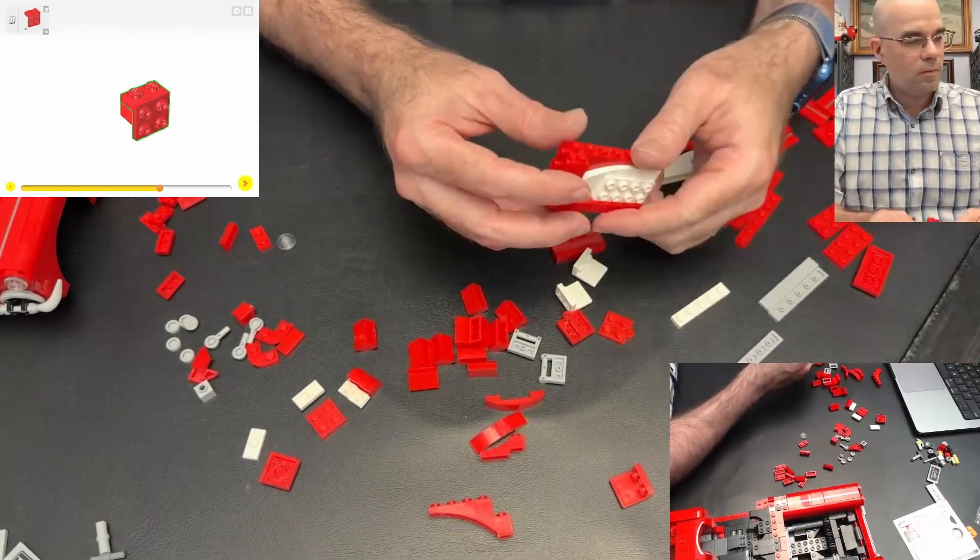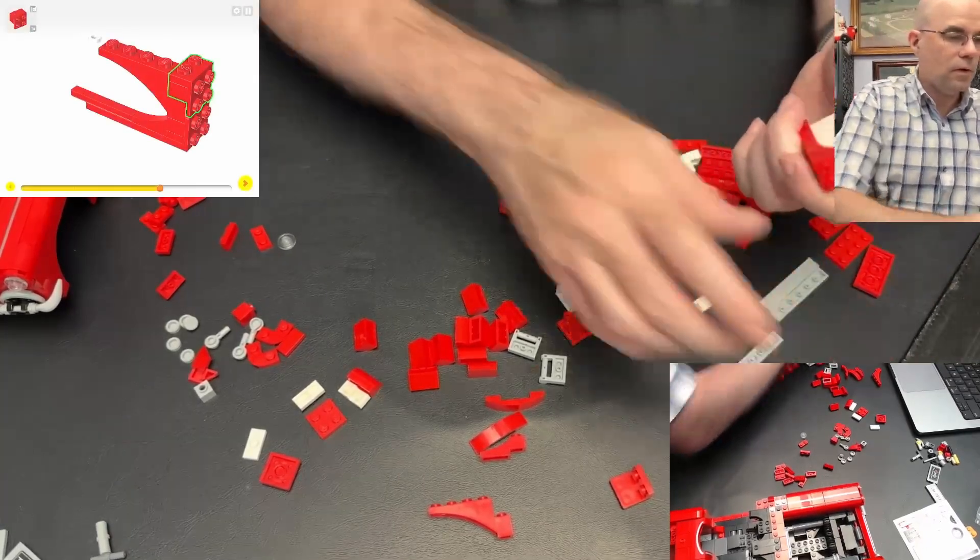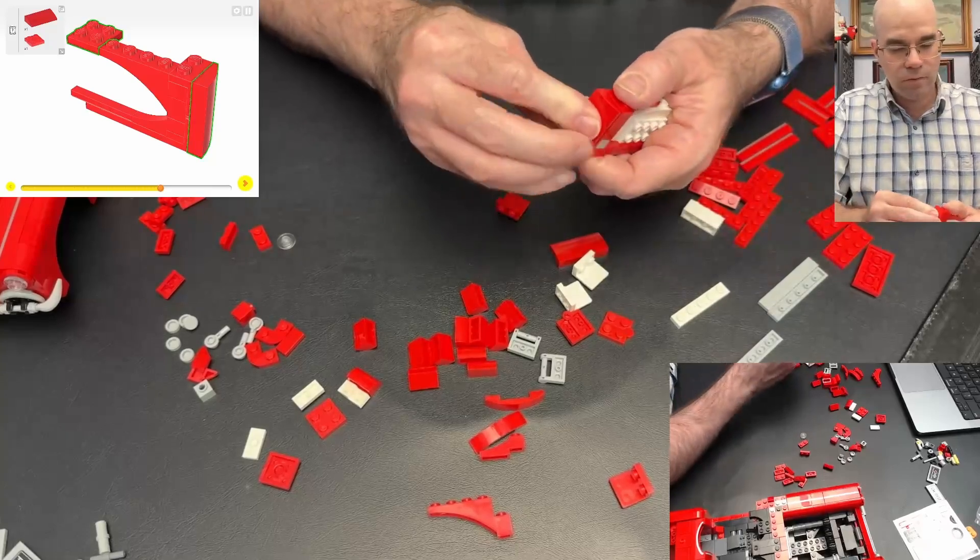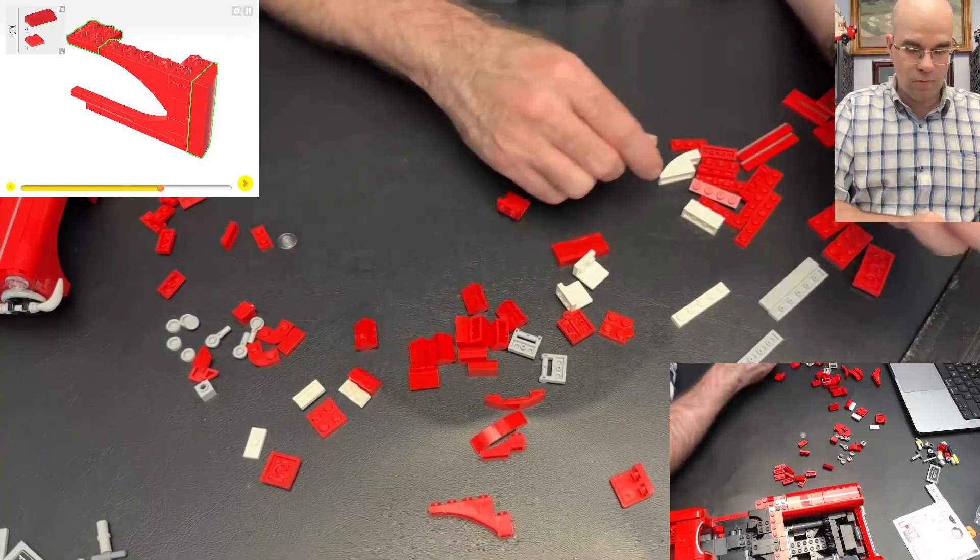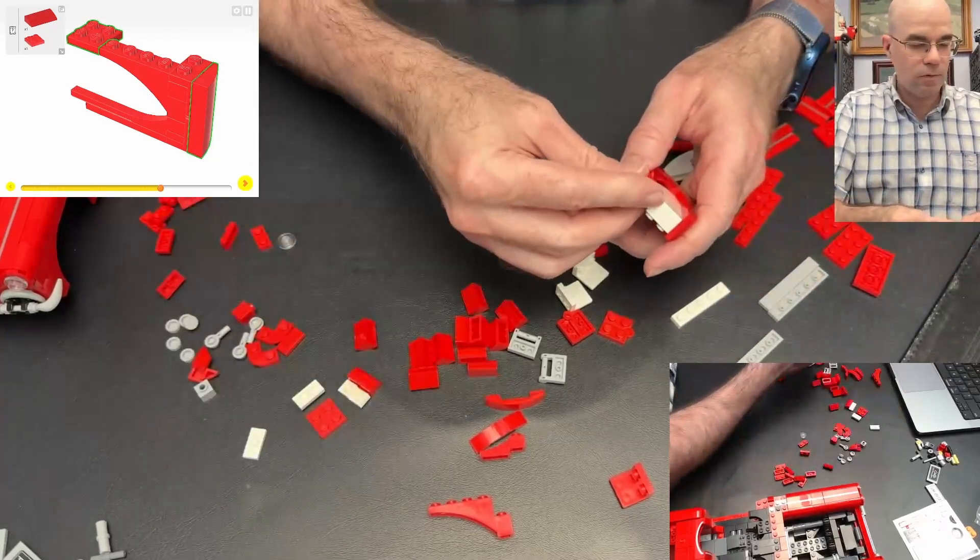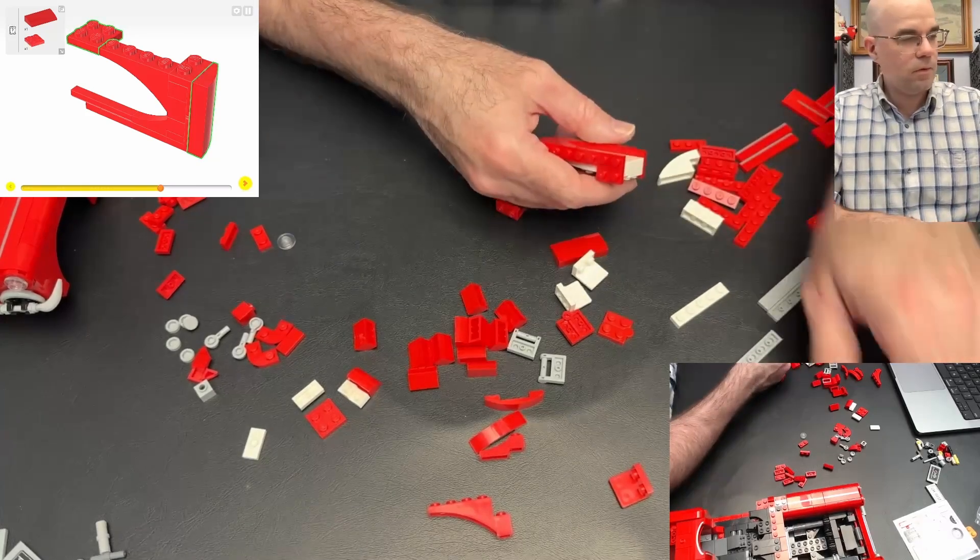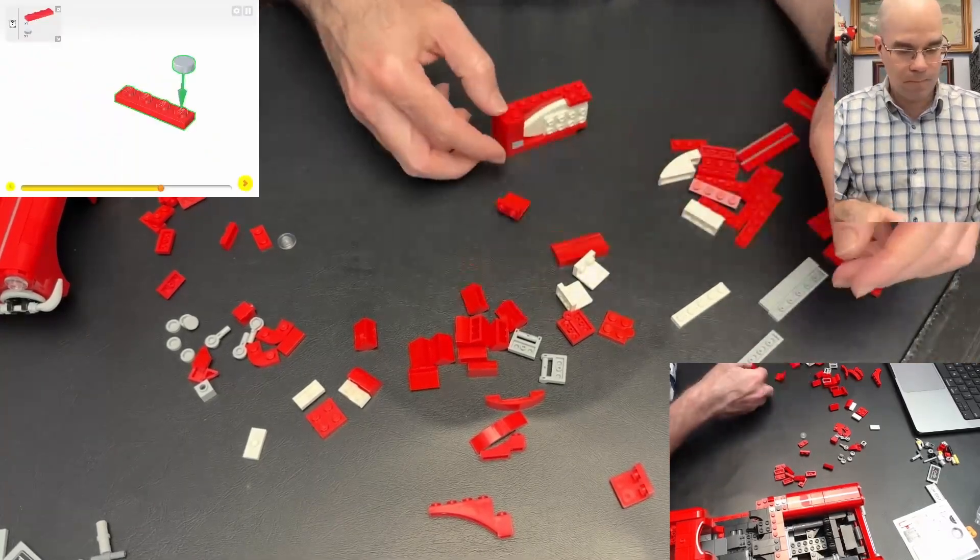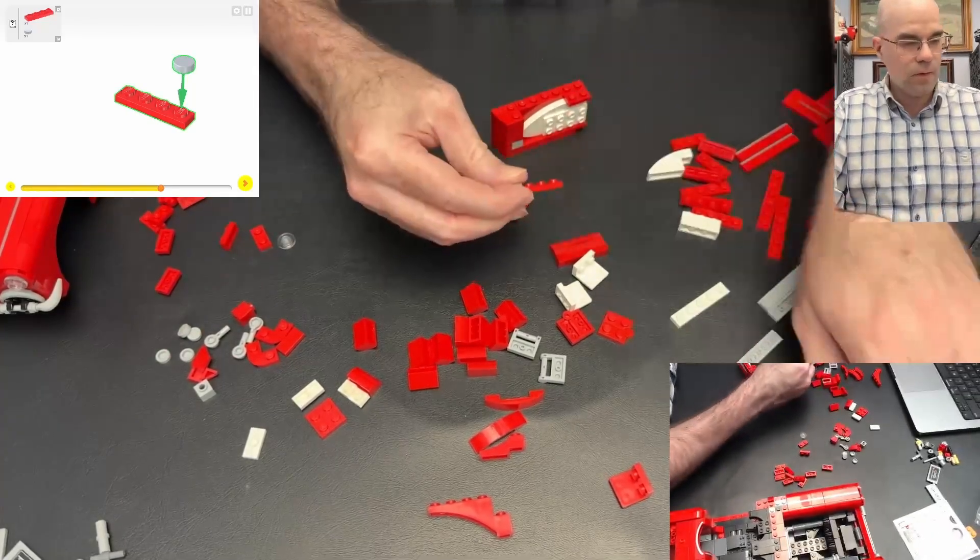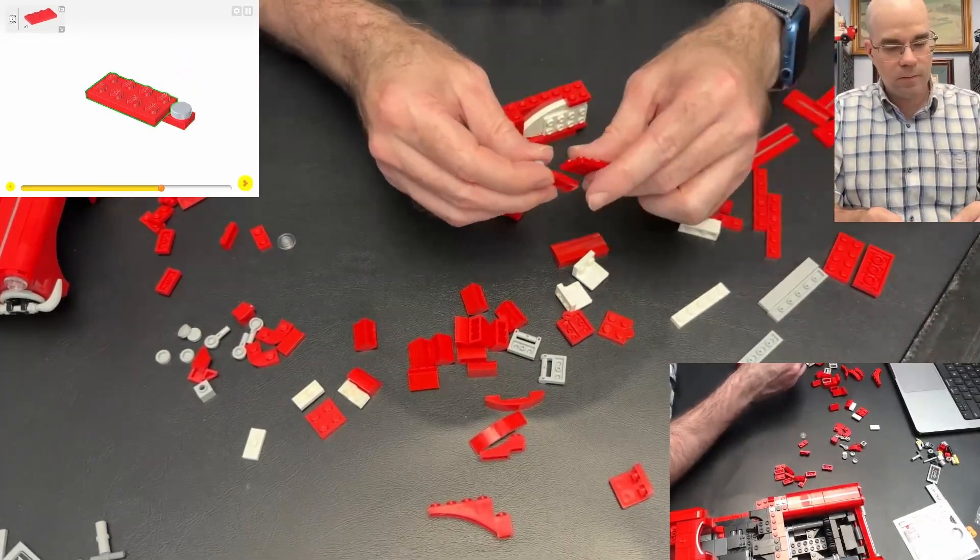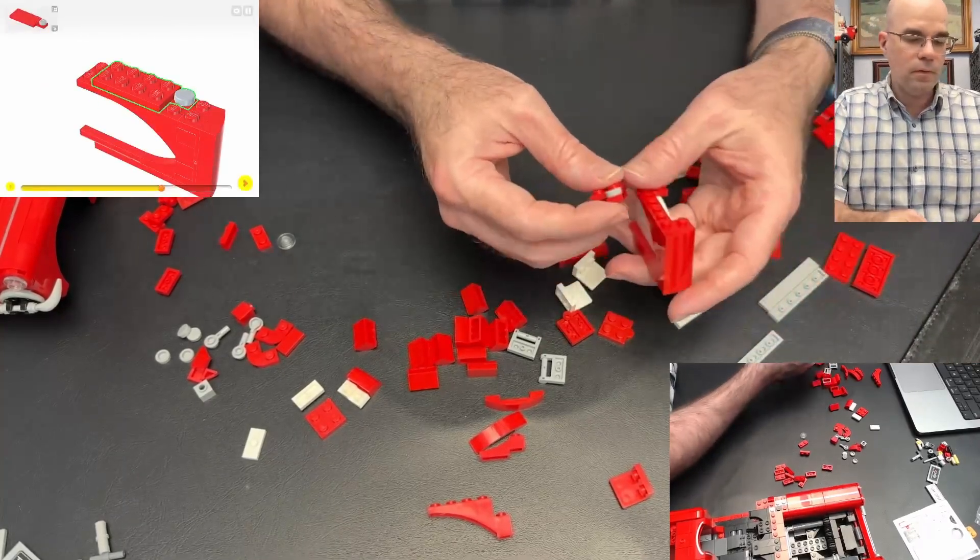We're making this side with snot brackets, and then we're going to put a big old slope on there. And we've got a plate to put on the other side. Is that right? Okay.